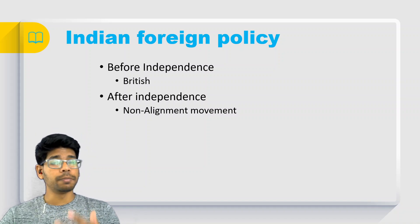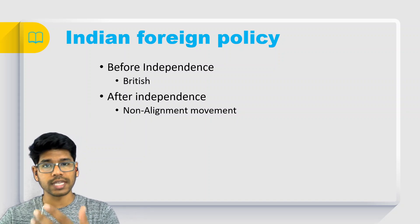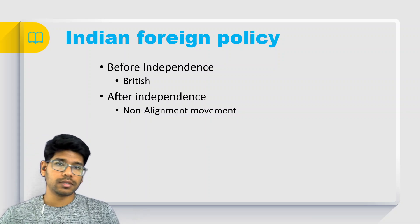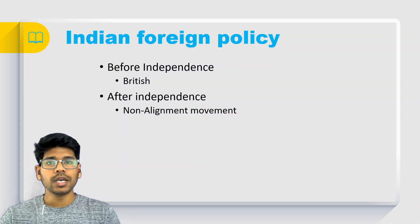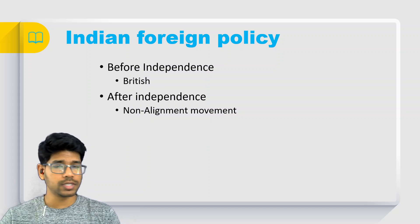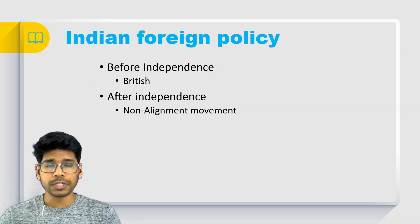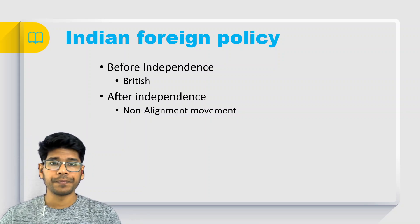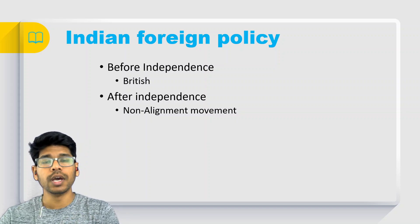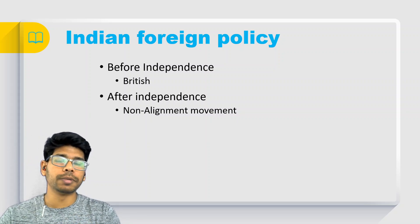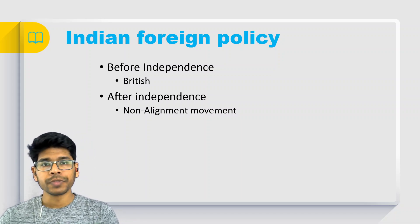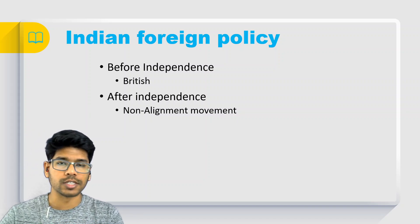Before independence, the British ruled India and set its foreign policy. After independence, and after World War Two, the world was bipolar — with two major powers, the USA and USSR. All newly independent countries had the option to align with America or Russia. In this context, India thought of the Non-Alignment Movement — meaning India would not join the bloc of the USA or USSR, remaining aligned to neither.